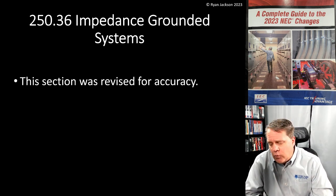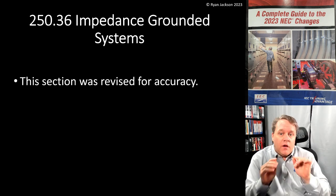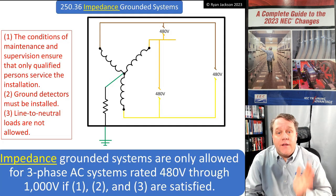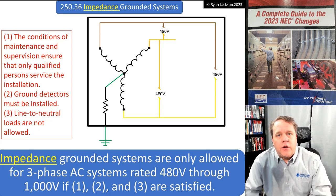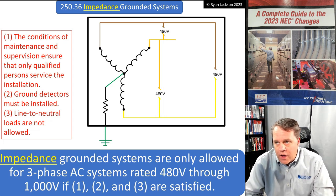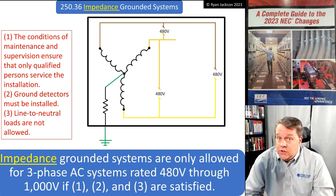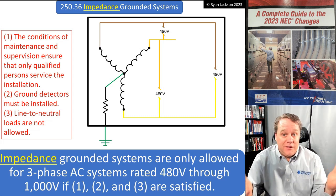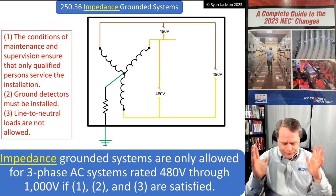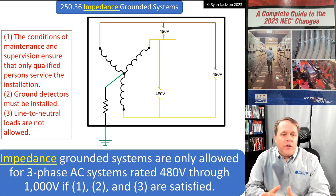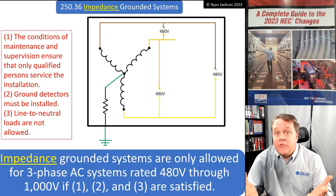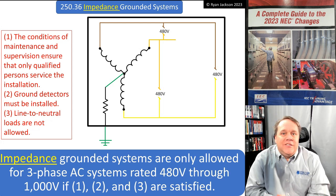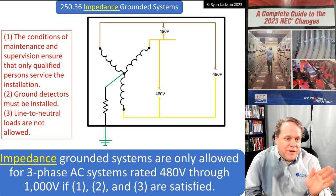First of all, 250.36 used to be called 'high impedance grounded neutral systems.' Well, why does it have to be 'high' impedance? There's certainly low impedance grounding as well. There's high impedance grounding and low impedance grounding, and as far as the NEC is concerned they're all the same - it's just impedance grounding. So right off the bat, calling it 'high impedance' never made sense.